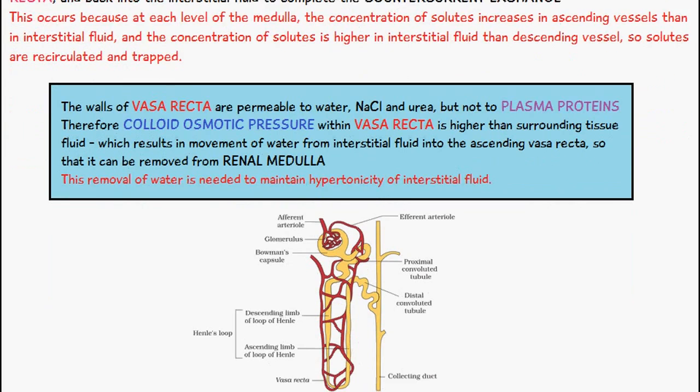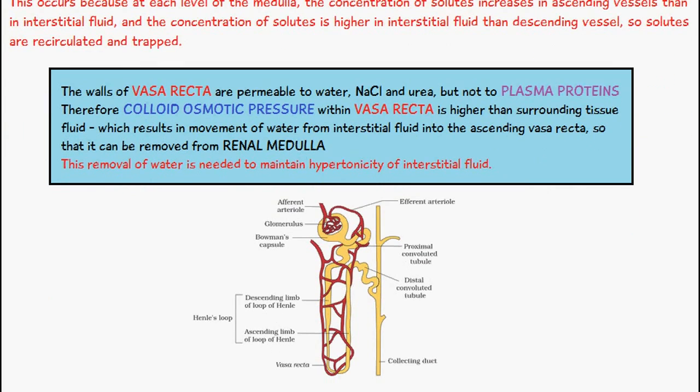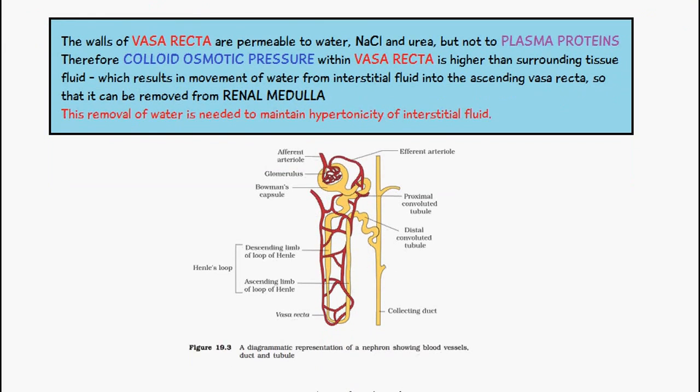The walls of the vasa recta are permeable to water, sodium chloride, and urea, but not to plasma proteins. Therefore there is a colloid osmotic pressure within the vasa recta that is higher than the surrounding tissue fluid, resulting in movement of water from the interstitial fluid into the ascending vasa recta so it can be removed from the renal medulla. This removal of water is needed to maintain hypertonicity of the interstitial fluid.